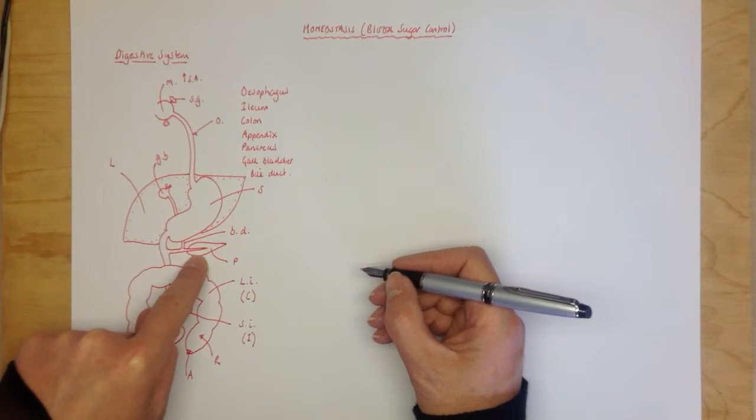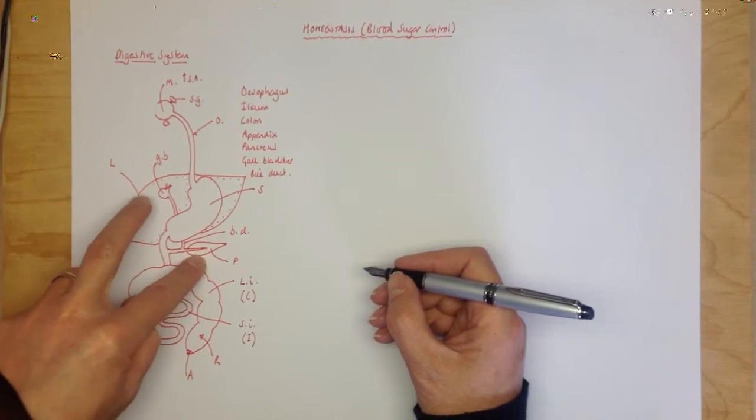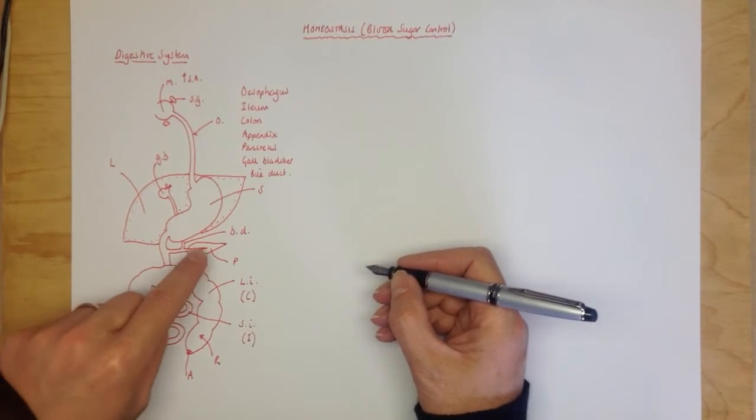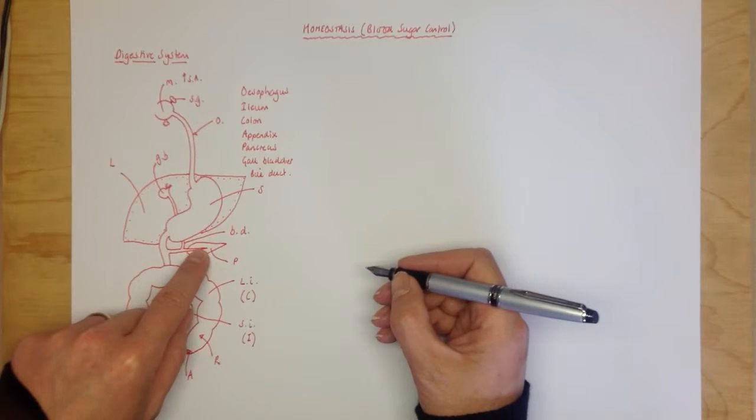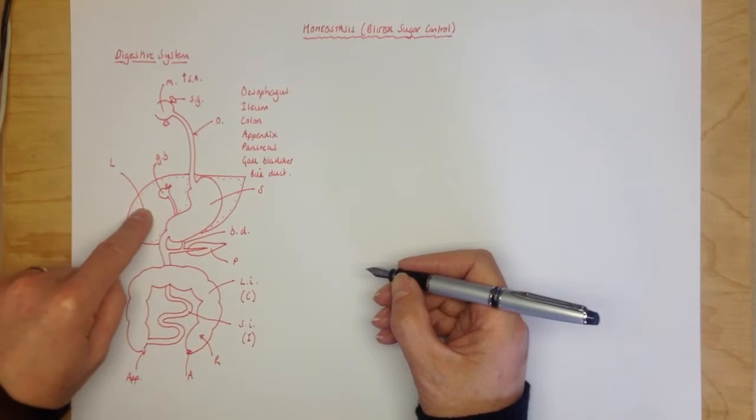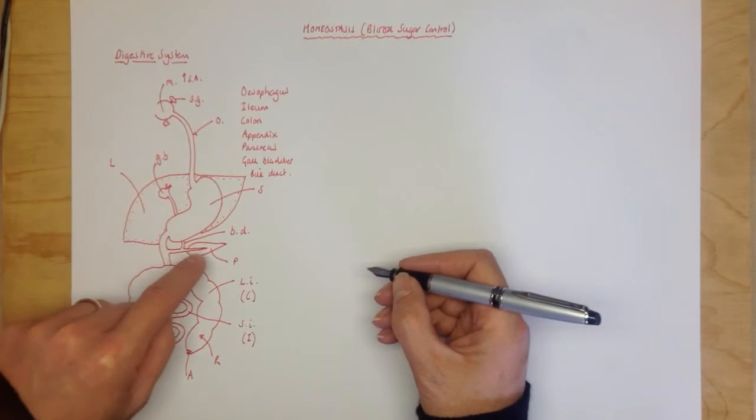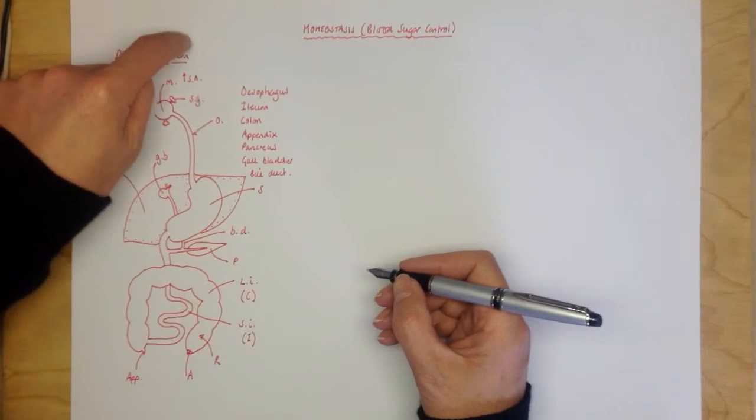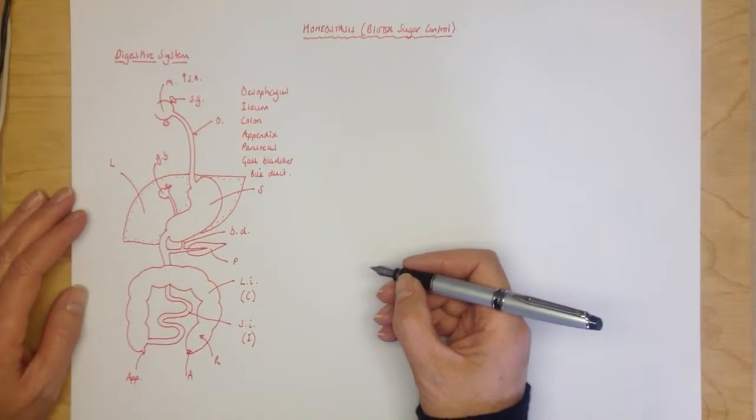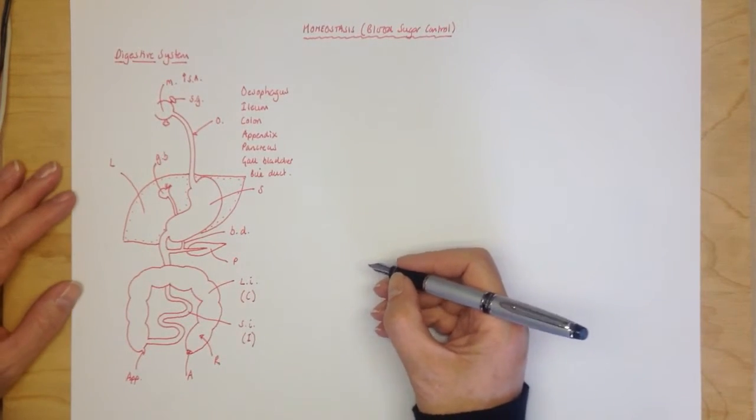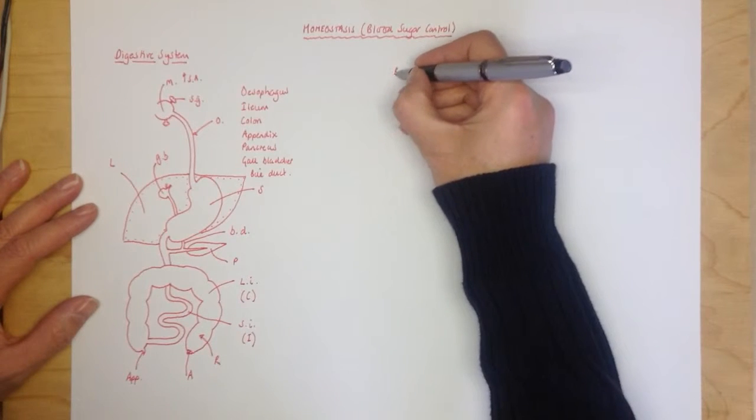Now the pancreas is involved in the control of blood sugar, and so is the liver. The pancreas releases two hormones - insulin or glucagon - that tells the liver to do certain things. The pancreas is told what to do by the brain, which is up here somewhere. Okay, so if we now look at blood sugar control.